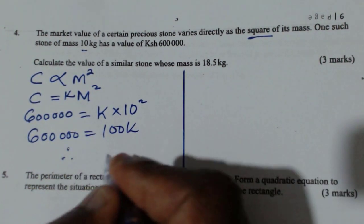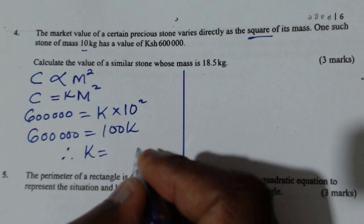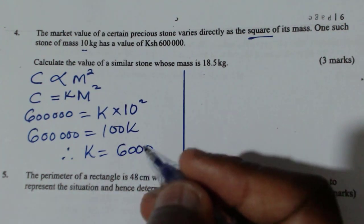So we'll be able to get the constant of proportionality. And in this case, K will be 6,000.